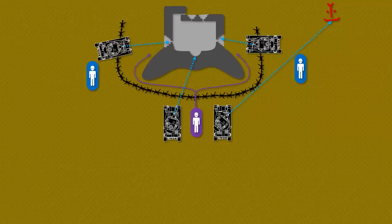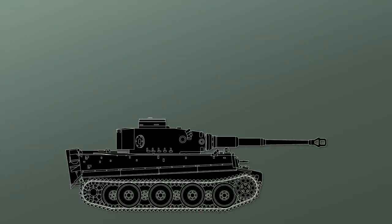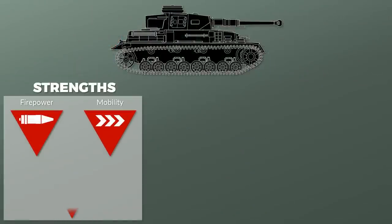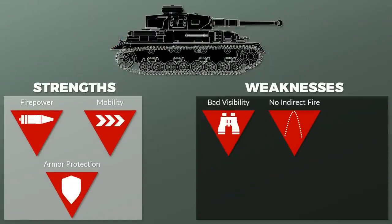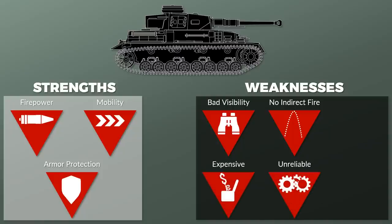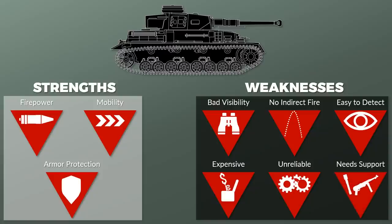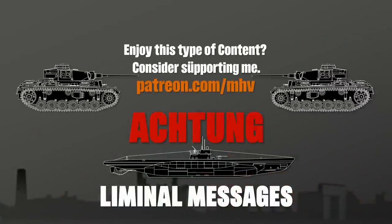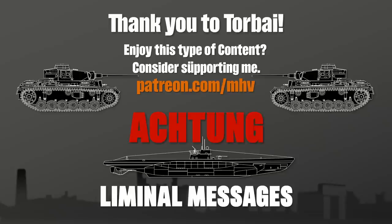To summarize, although many people seem to be in awe of German Panzers and technology, in general the key to success for the German Panzer forces was combined arms warfare — something also discussed in my video on why the Wehrmacht was so combat effective. A Panzer combines firepower, mobility, and armor protection, yet lacks visibility and indirect fire capabilities. Additionally, it is expensive, rather unreliable, and easy to hear and spot. As such, it often needs to be supported not only during the battle, but also during the assembly and other phases, which are usually rarely discussed yet absolutely crucial for the success of an attack. I hope you learned something new — if you did, consider supporting me on Patreon. Thank you to Torbay for helping with definitions and terminology. Sources are in the description. Thank you for watching and see you next time.